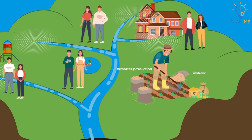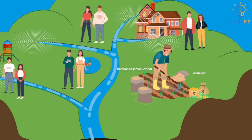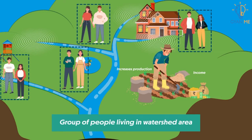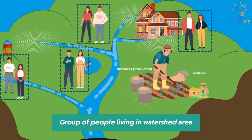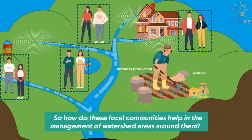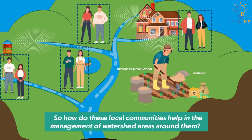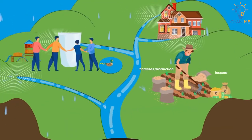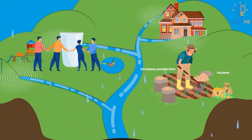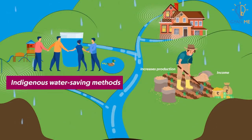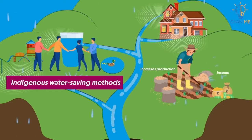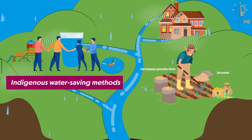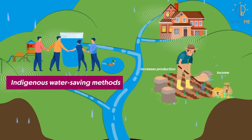Now, what is a watershed community? As I told you, it is a group of people living in that watershed area. So, how do these local communities help in management of watershed areas around them? These communities have used hundreds of indigenous water-saving methods to collect and save every trickle of water that falls on the land.